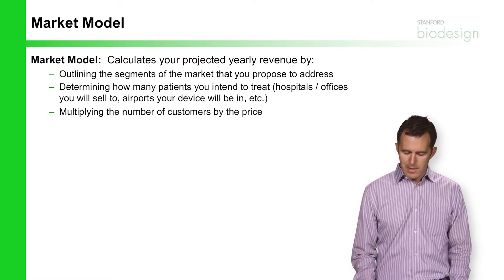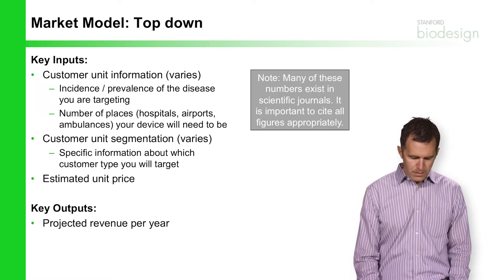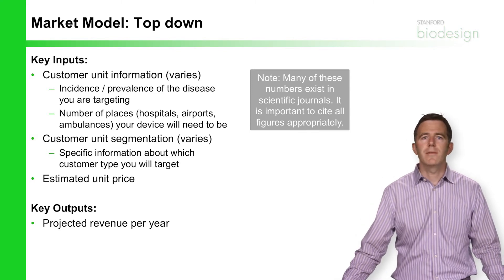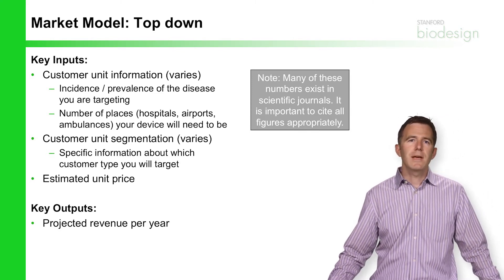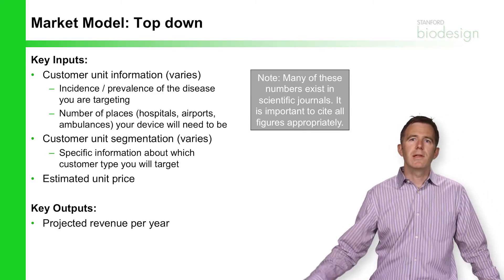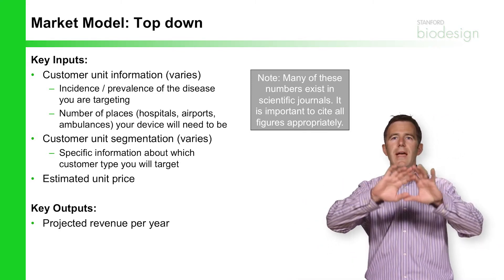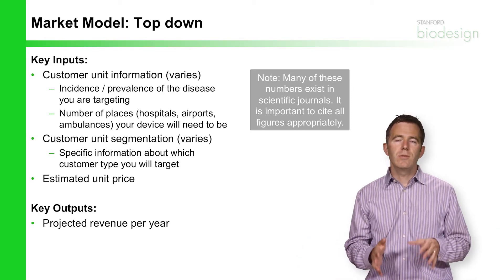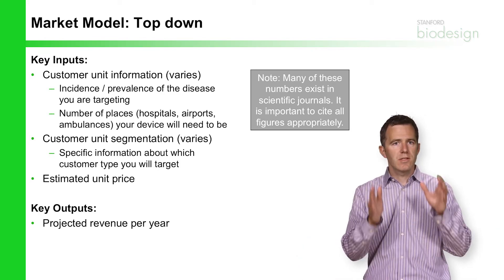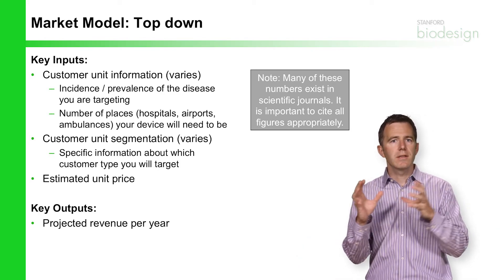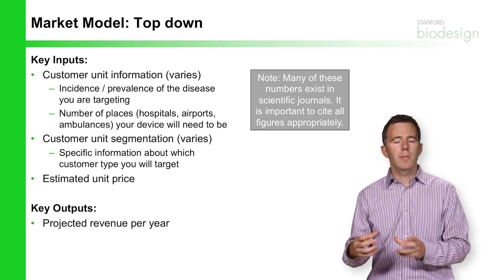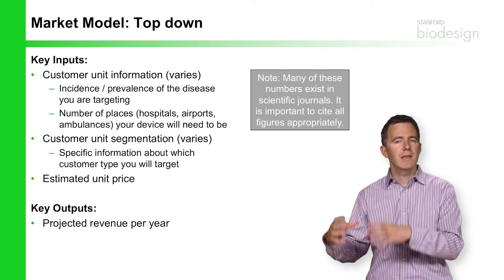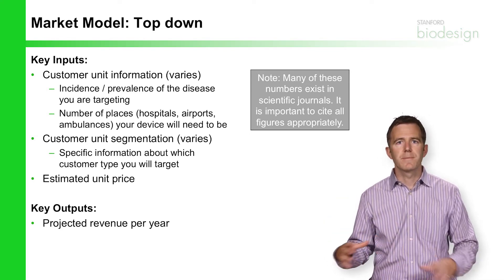There are two types of market models. The first is called the top-down market model. The top-down market model looks at the market as a whole, and then you split the market into pieces and determine how much business you can get in each one of those individual pieces.